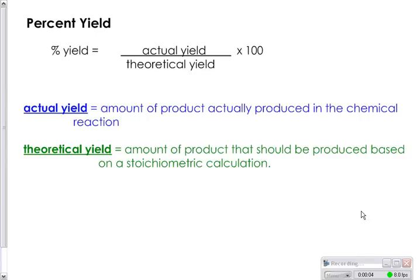All right, this is a percent yield problem, and percent yield is a way of measuring how well you did in a reaction when you actually carry it out in the lab. So if you look at the formula for percent yield, you have actual yield divided by theoretical yield, and then multiply by 100 to make it a percent.